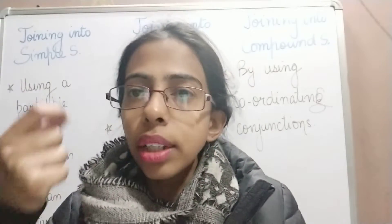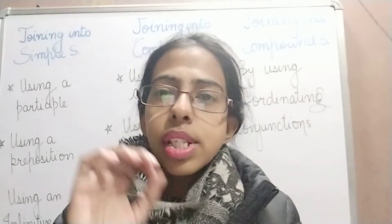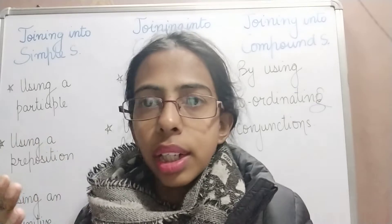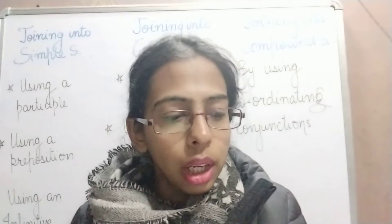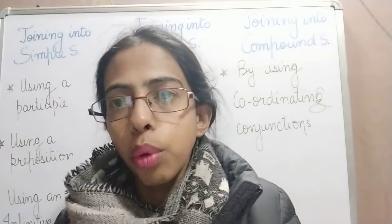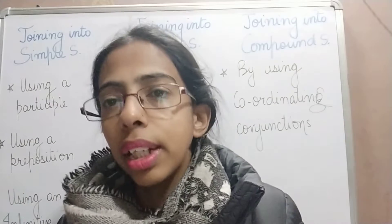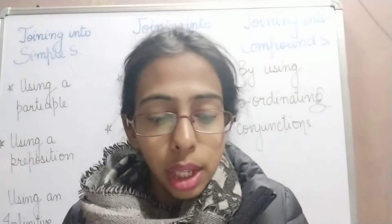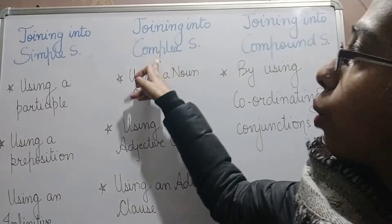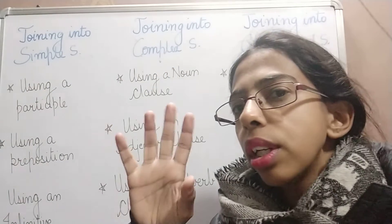Another example: 'He got the reward. He was delighted.' Joined: 'He was delighted when he got the reward.' Here 'when' is a subordinating conjunction. Or: 'He was delighted because he got the reward.' 'Because' is also a subordinating conjunction. So when you have two simple sentences and want one complex sentence, use a subordinating conjunction.